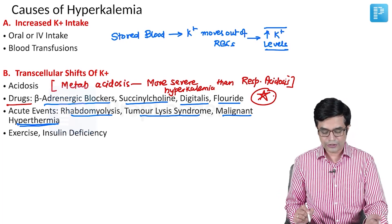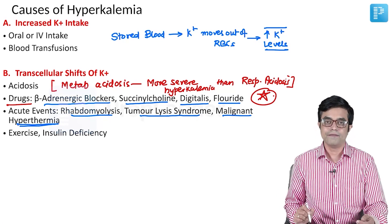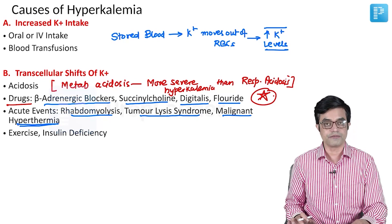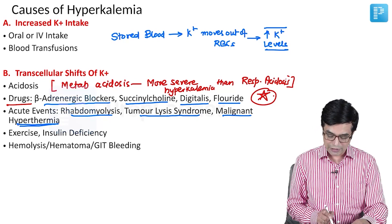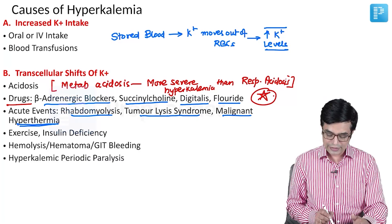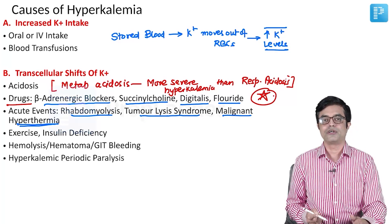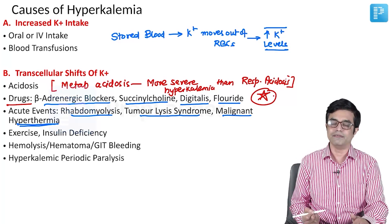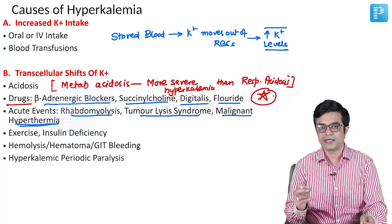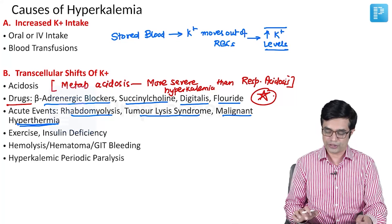In people who are undergoing vigorous exercise as well as insulin deficiency can cause transcellular shifts of potassium. Hemolysis, hematoma, and GI bleeding can also cause transcellular shift of potassium to the outside. And finally, there is hyperkalemic periodic paralysis which is a channelopathy in which transcellular shift produces episodic paralysis, episodic hyperkalemia in the patient.